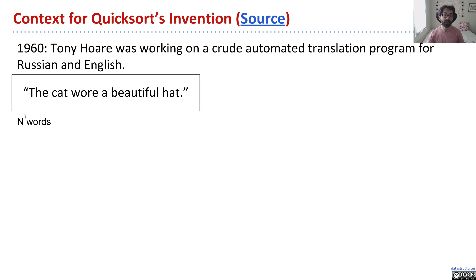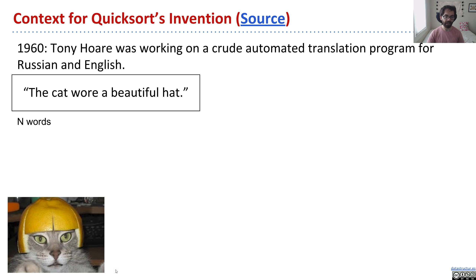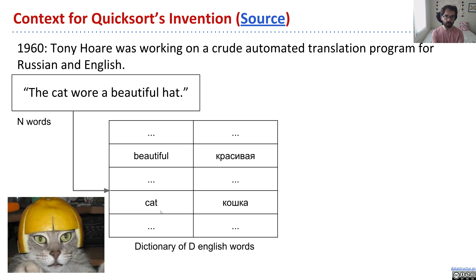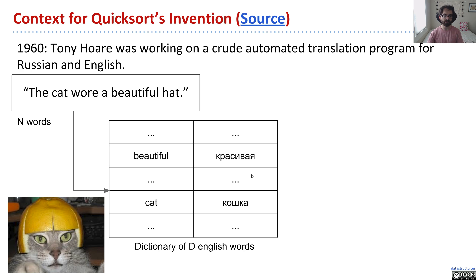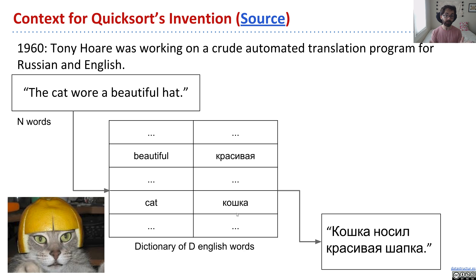The translator made no attempt to understand the content of the sentence — it was just a word-for-word translation. So if we had a sentence like 'the cat wore a beautiful hat,' like this cat here, he would take that English sentence and put it through a dictionary of d English words that has, for each English word, the appropriate Russian word. There probably was actually a sequence of words with some probabilities, but the exact algorithm is lost to time. So we end up with a very crude translation of the English sentence.